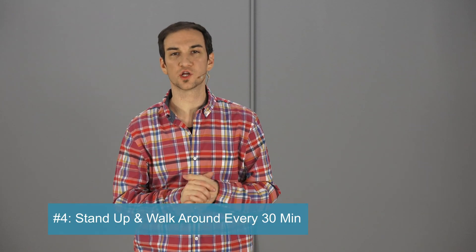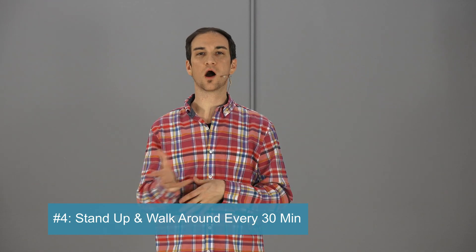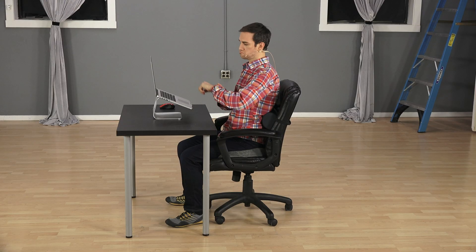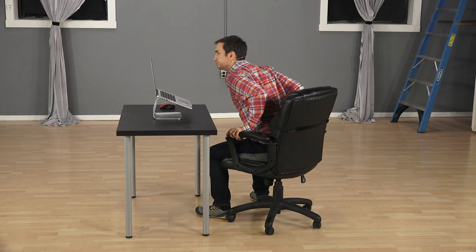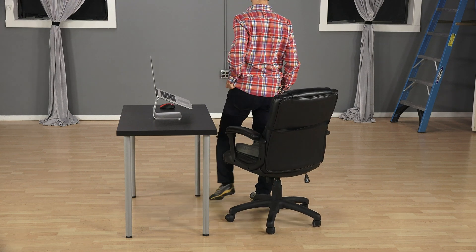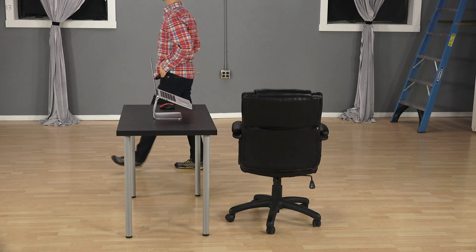The fourth way to vary your posture is simply to get up and walk around every 30 minutes or so. An easy way to do this is just get a bottle of water that you need to refill every so often so that will give you an excuse to get up and refill your water. That's an easy one.